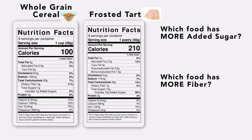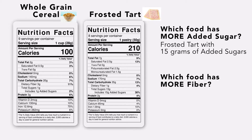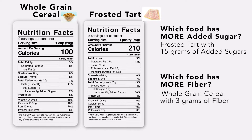Remember to pause this video if you need more time to write down your answers. If you chose the tart for more added sugar because it has 15 grams of added sugars, and the whole grain cereal for more fiber because it gives you three grams of fiber per serving — you've got this right!